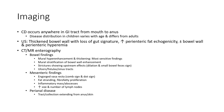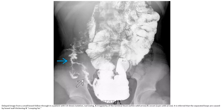Delayed image from a small bowel follow-through in a patient with chronic disease shows isolation, narrowing, and irregularity of the terminal ileum, as indicated by the solid arrow. Wall thickening is also noted. The separated bowel loops are caused by bowel wall thickening and creeping fat.